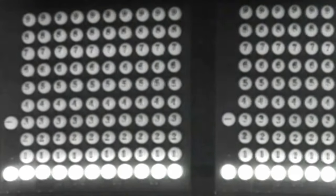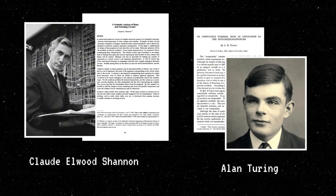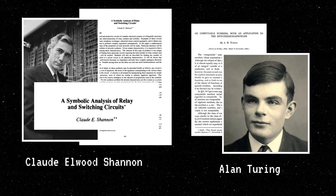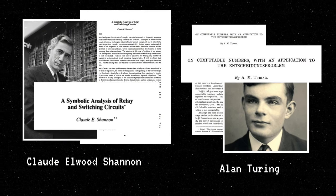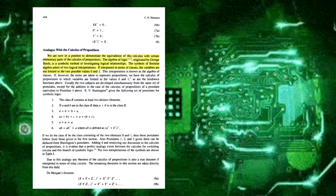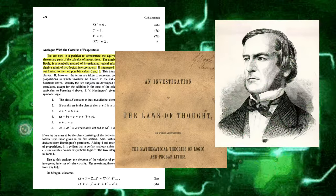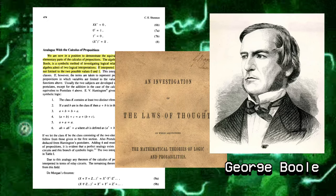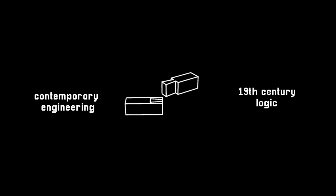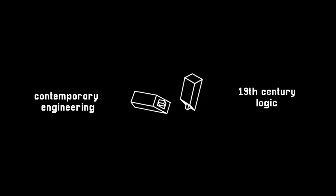The evolution of computer science from mathematical logic reached a pivotal moment in the 1930s with two groundbreaking papers: Claude Shannon's "A Symbolic Analysis of Switching and Relay Circuits" and Alan Turing's "On Computable Numbers, with an Application to the Entscheidungsproblem." At first glance, Shannon's paper appears to be a standard work in electrical engineering, filled with mathematical equations and illustrations of electrical circuits. But what sets it apart is its surprising primary source: a 90-year-old treatise on mathematical philosophy by George Boole titled "The Laws of Thought." This unexpected connection between contemporary engineering and 19th century logic highlights the paper's unique and interdisciplinary nature.